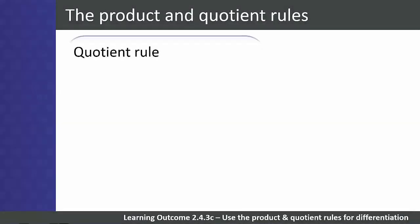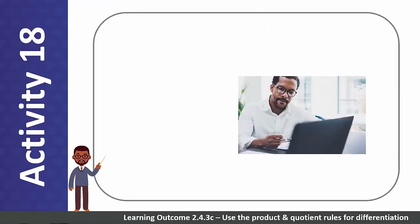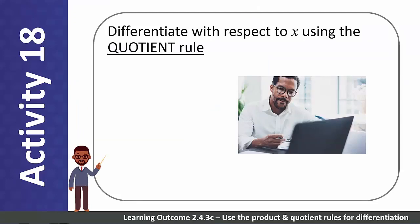The Quotient Rule can be described as: the bottom function times the derivative of the top function, minus the top function times the derivative of the bottom function, all over the bottom function squared. Work through the following examples on your own or in pairs. Differentiate using the quotient rule: Number 1: y equals x to the 5 over x squared. Number 2: y equals sin x over cos x.